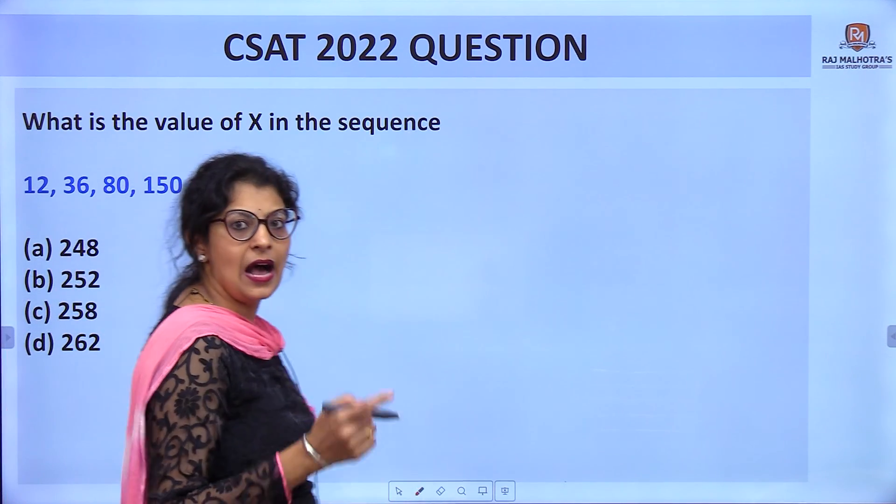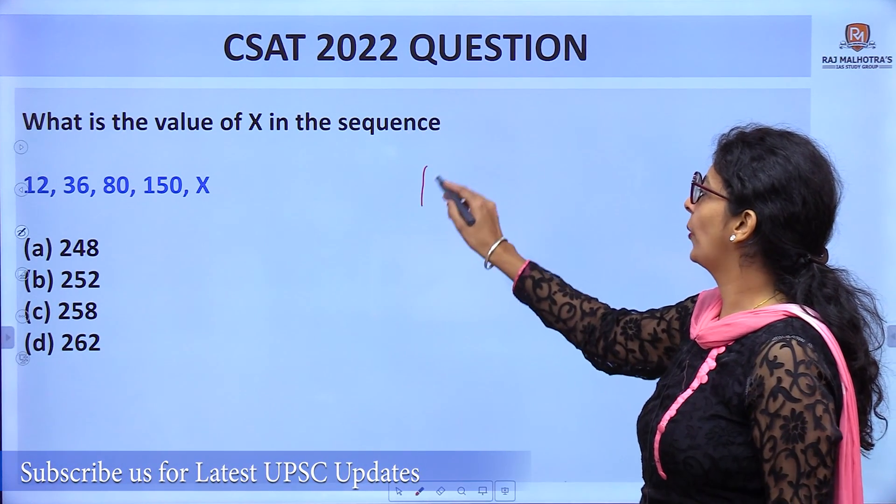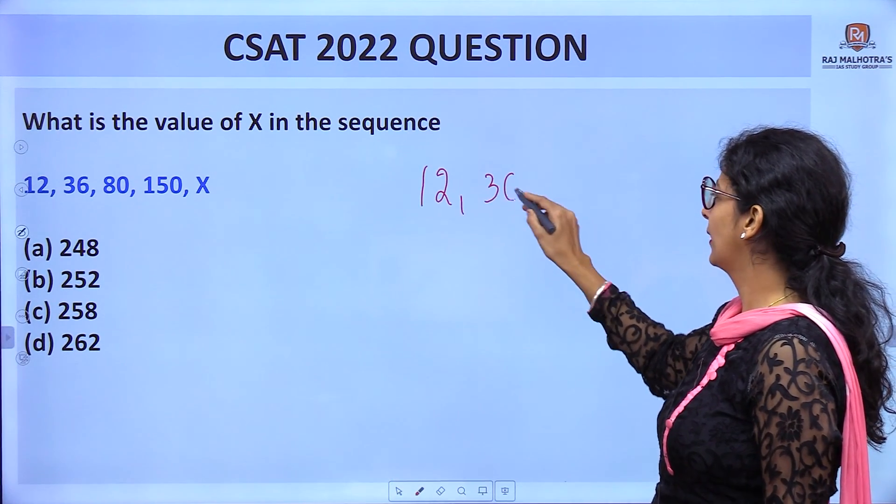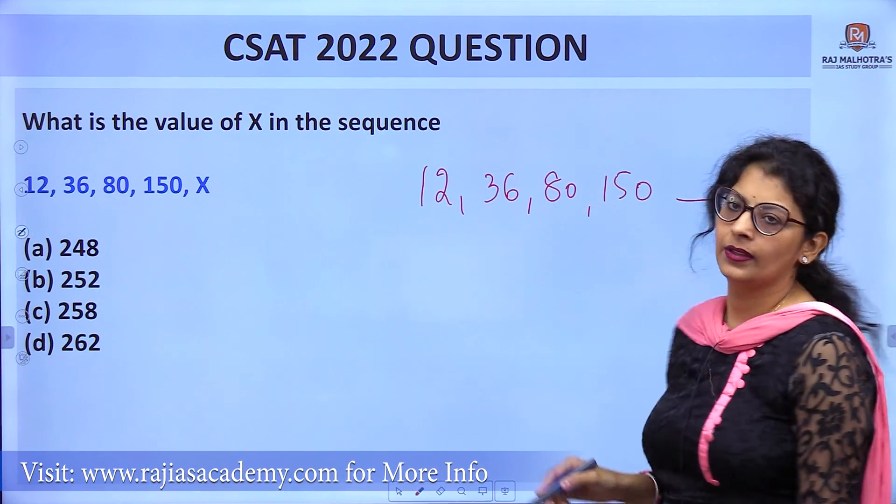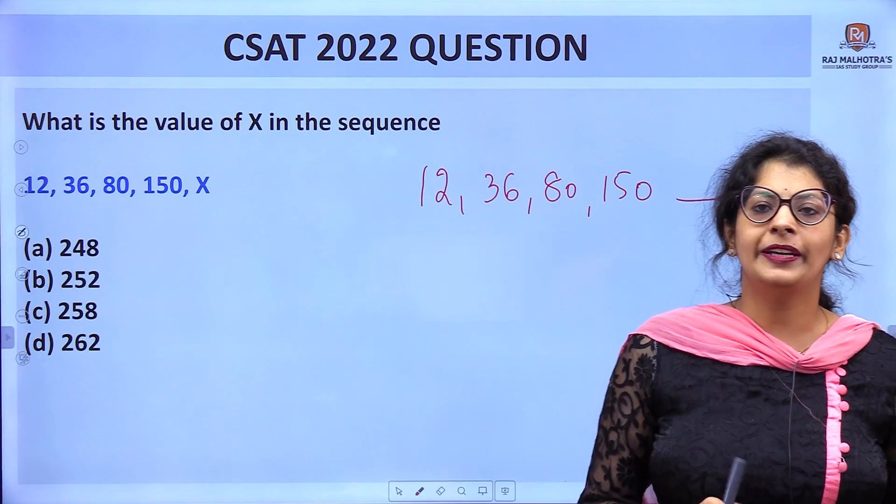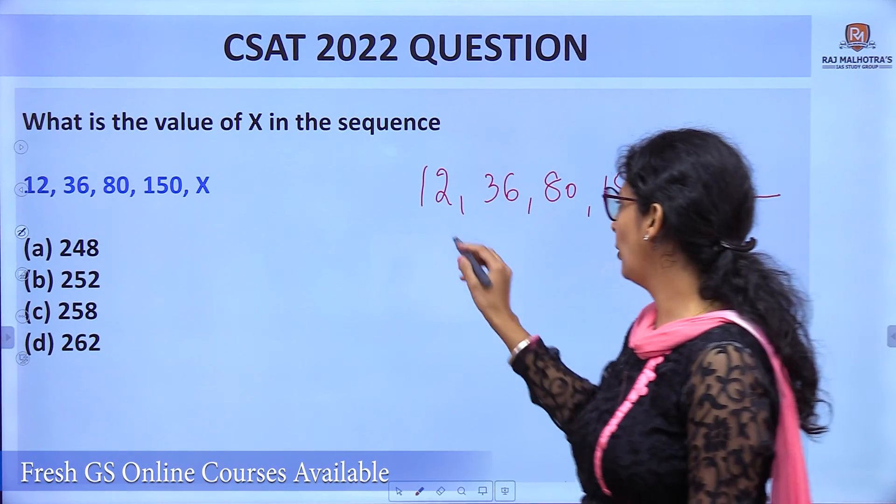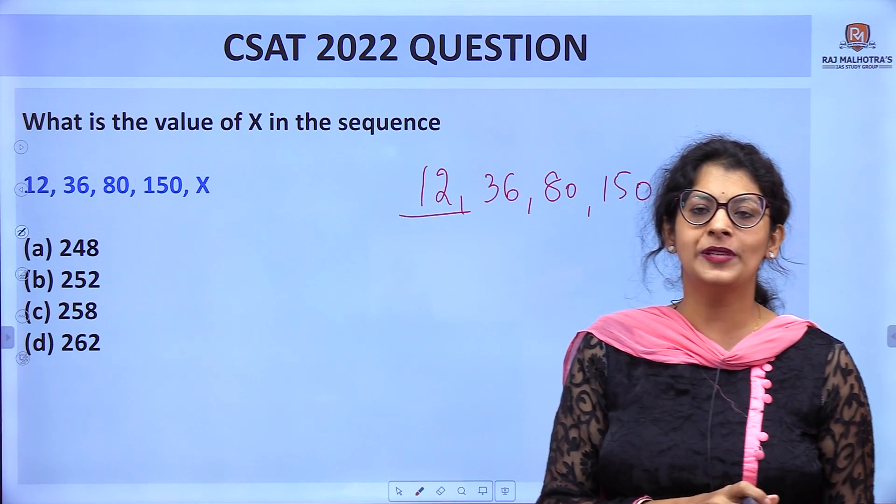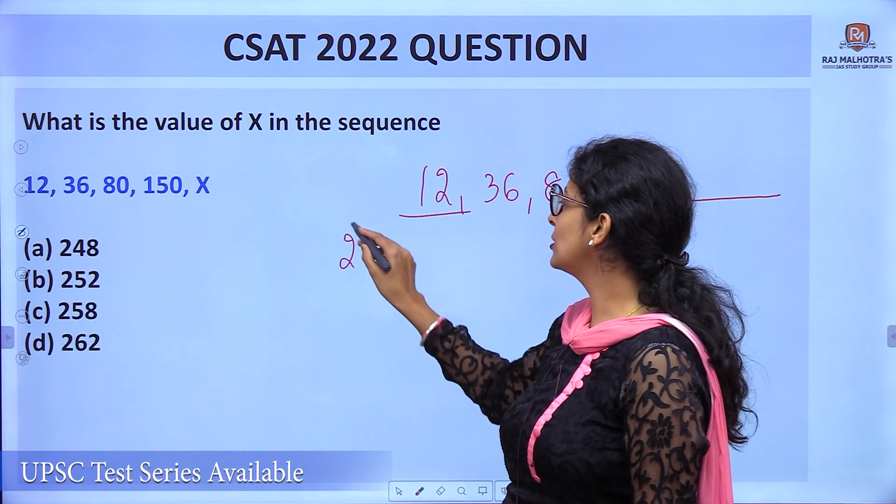Let's move to the next question. The series is 12, 36, 80, 150, x. This question can be done by two methods. The easiest method uses cubes and squares, as I said earlier.